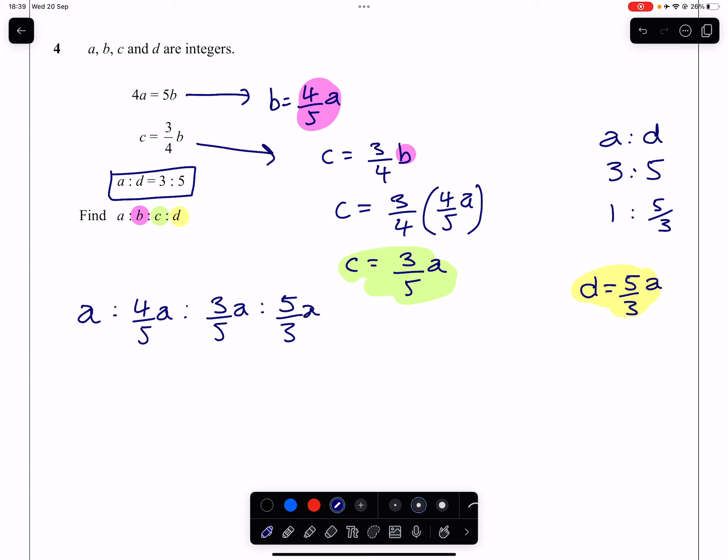In order to simplify that, we're going to divide every side by A first of all. So we just have the following raw numbers: one to four-fifths to three-fifths to five-thirds.